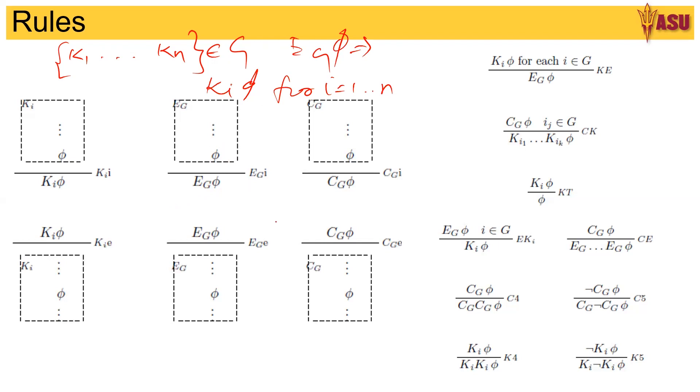Similarly you have the elimination rule for E of G. And C of G is E of G of phi and E of G of E of G of phi and so on. That is, every group knows that every agent knows phi and every other agent knows phi and so on and so forth.